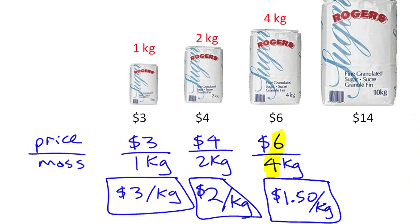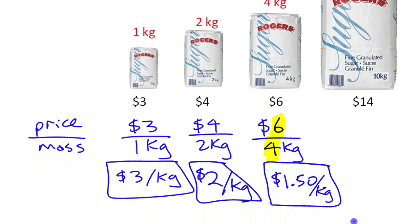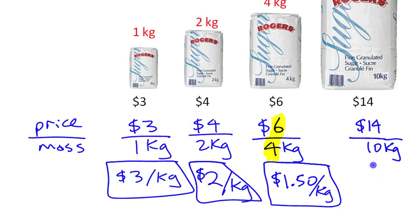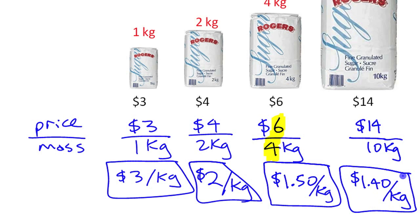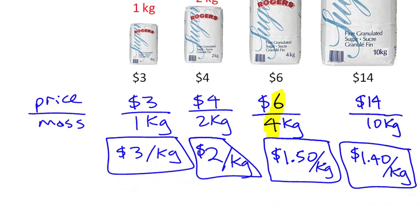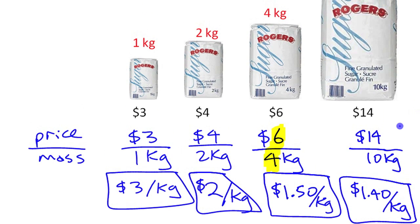The last bag is ten kilograms for fourteen dollars — so fourteen dollars for ten kilograms. Divide fourteen by ten and you get 1.4, so it's a dollar forty per kilogram. There are our four different unit rates, one for each bag.